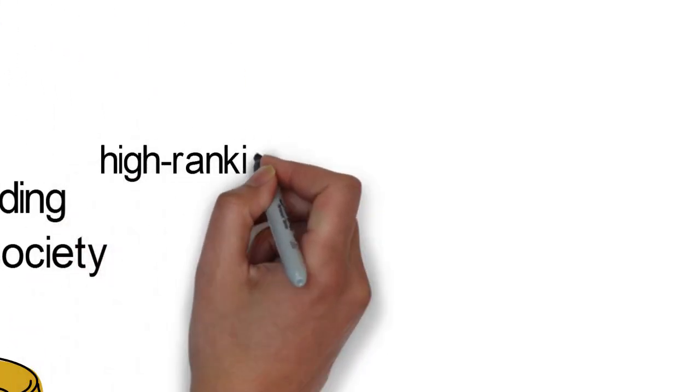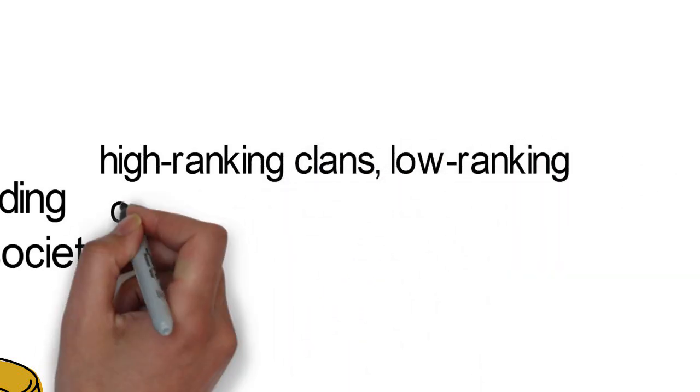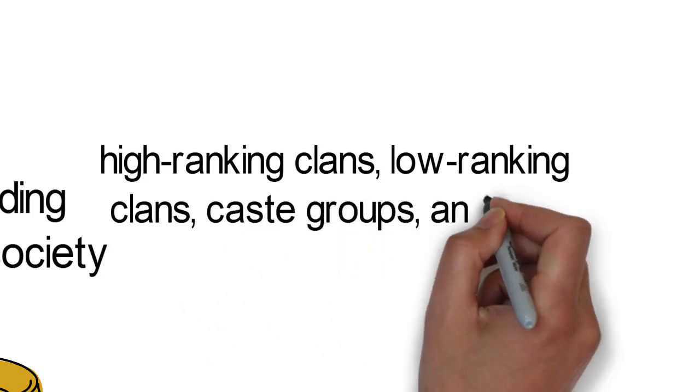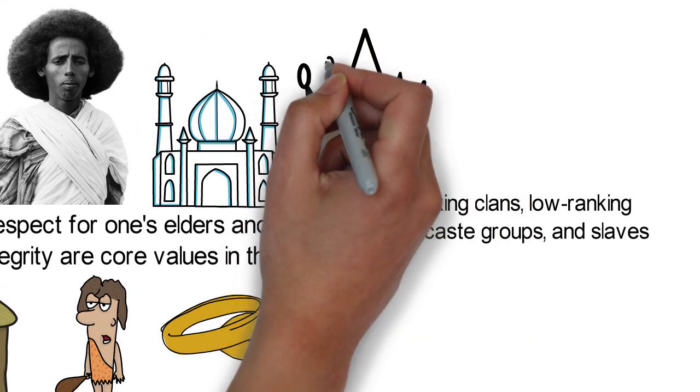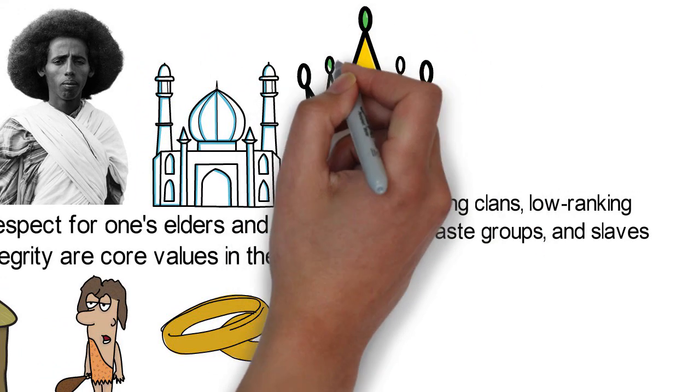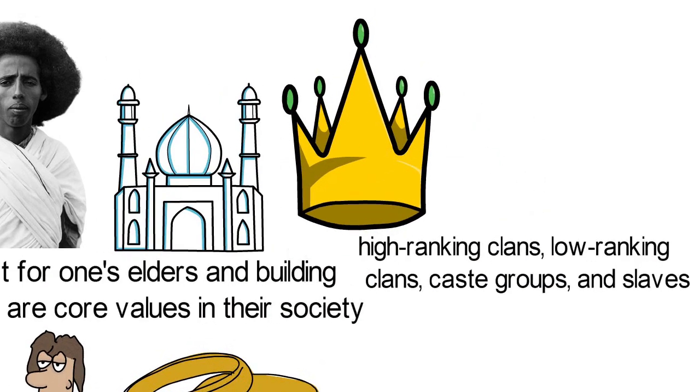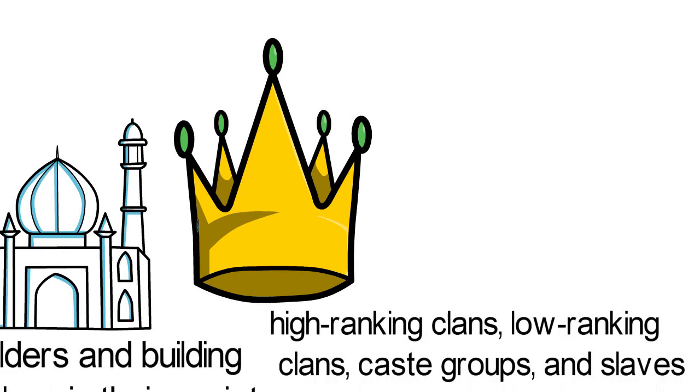Within the traditional Somali society, there used to be some form of social stratification comprising high-ranking clans, low-ranking clans, caste groups, and slaves. Nobles make up the upper class and were known as bilis. They are composed of individuals of ethnic Somali ancestral origin. Nobles take pride in their belief that they are of Arabian ancestry and trace their ancestry to Muhammad's lineage of Quraysh and those of his companions.